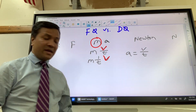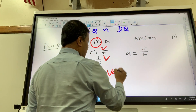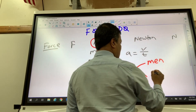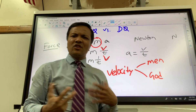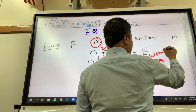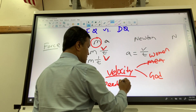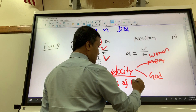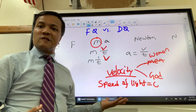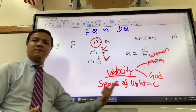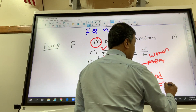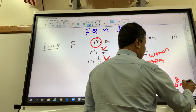Just like acceleration, velocity can also be God-made and woman-made. The God-made velocity is the speed of light, represented by C. C is a constant: 3 times 10 to the 8 meters per second. You have no control over it.